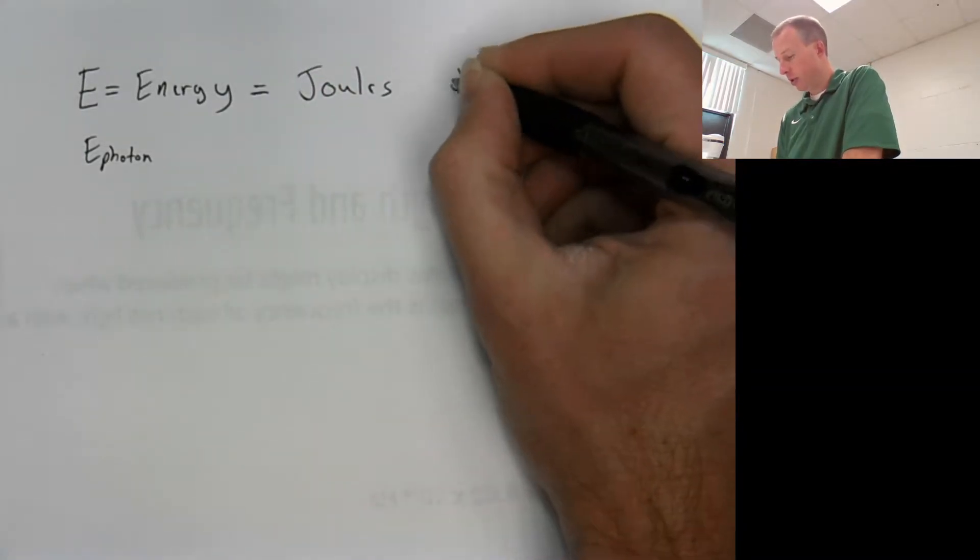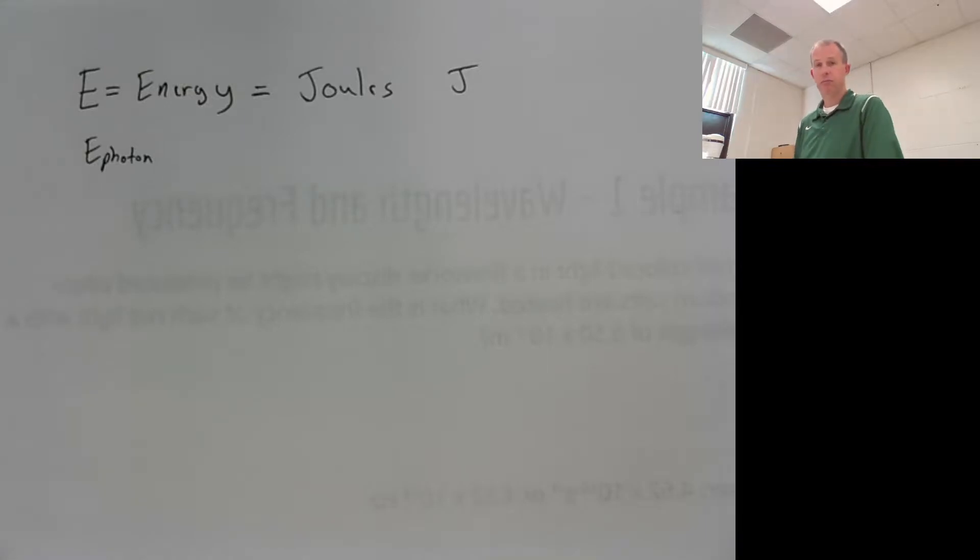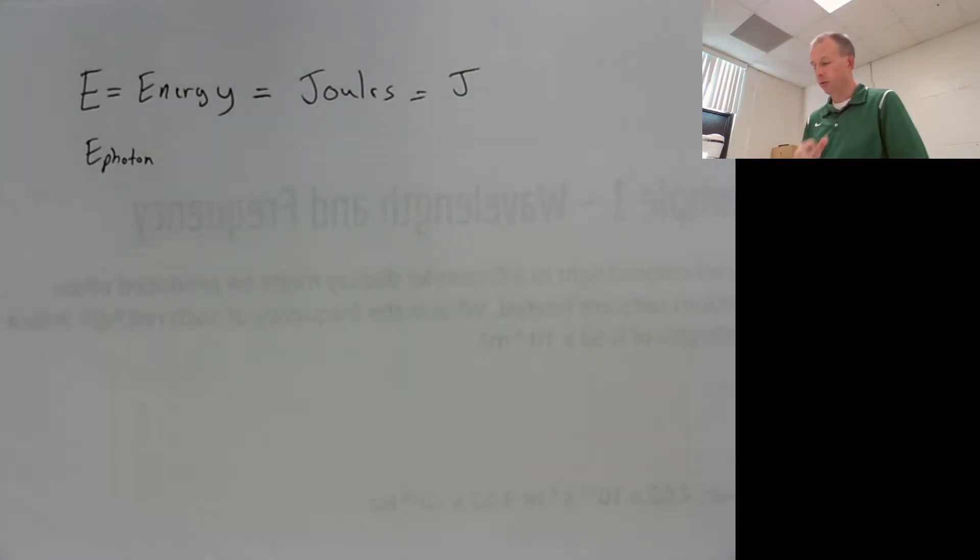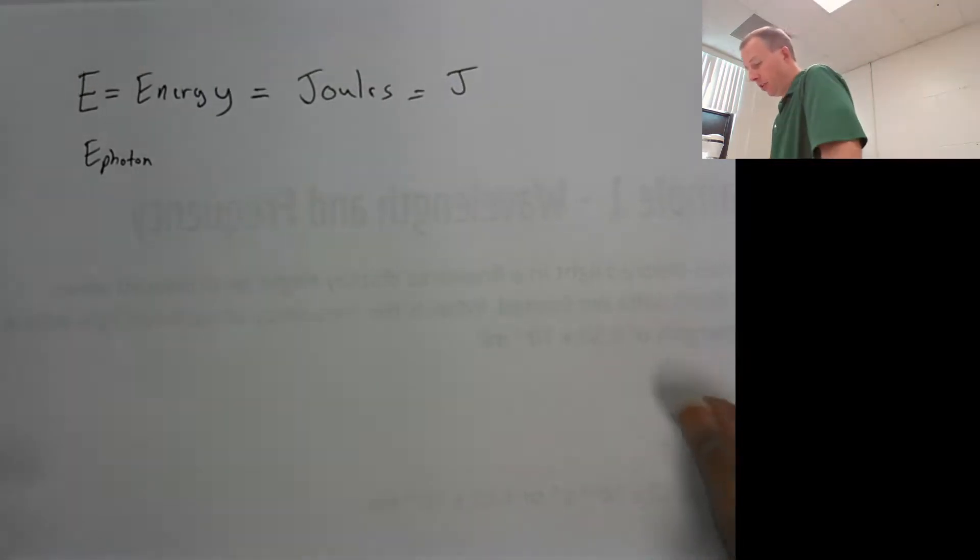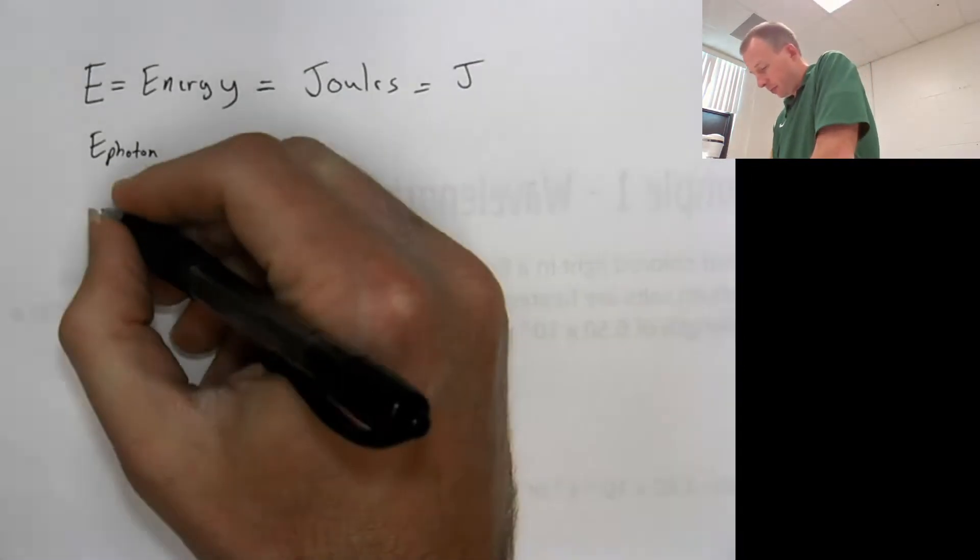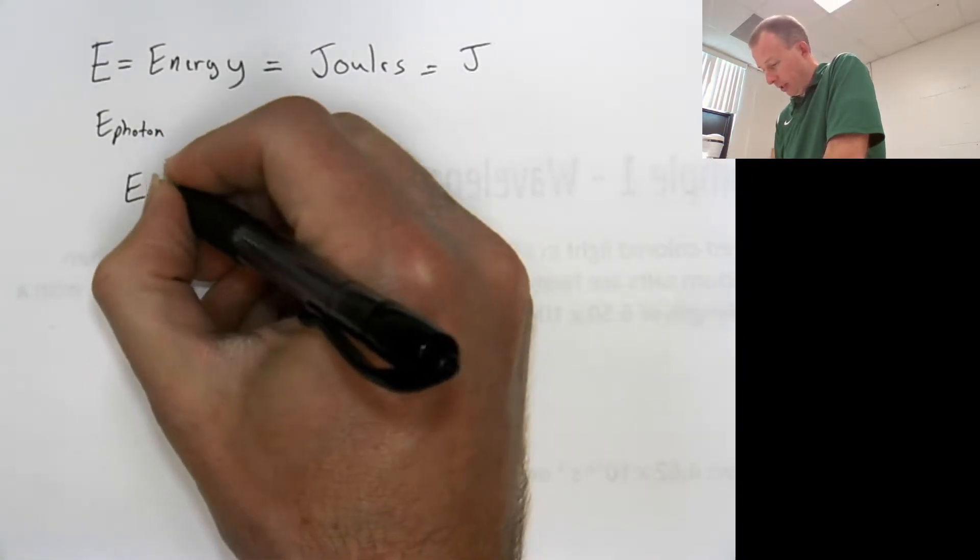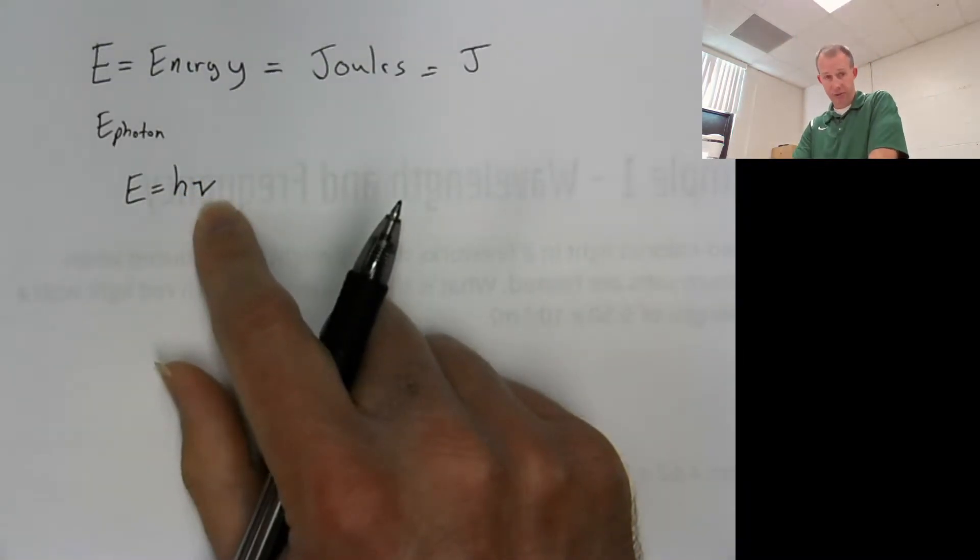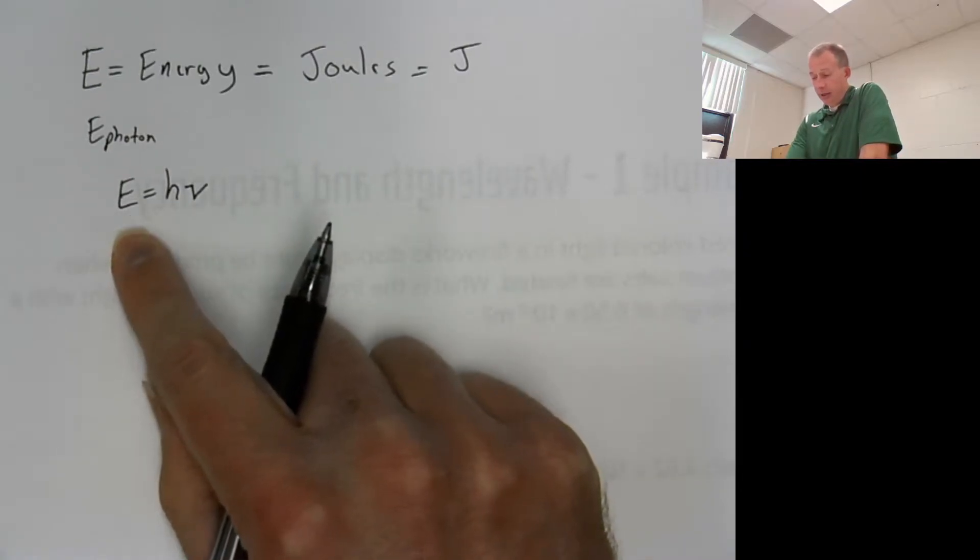We represent joules with a J. Pretty simple. Now the equation that we're going to be focusing on here that relates energy to frequency looks like this: E is equal to hν. Remember that ν is frequency. E is energy.